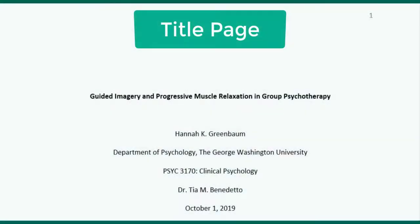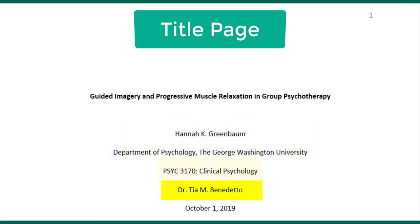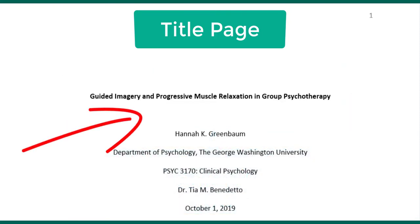The main part of the title page includes the paper title, author name and affiliation, course, instructor, and the paper due date. The paper title should be placed three to four lines down from the top of the title page. Center it and type it in bold font. Capitalize major words of the title. Place one double-spaced blank line between the paper title and the author name.